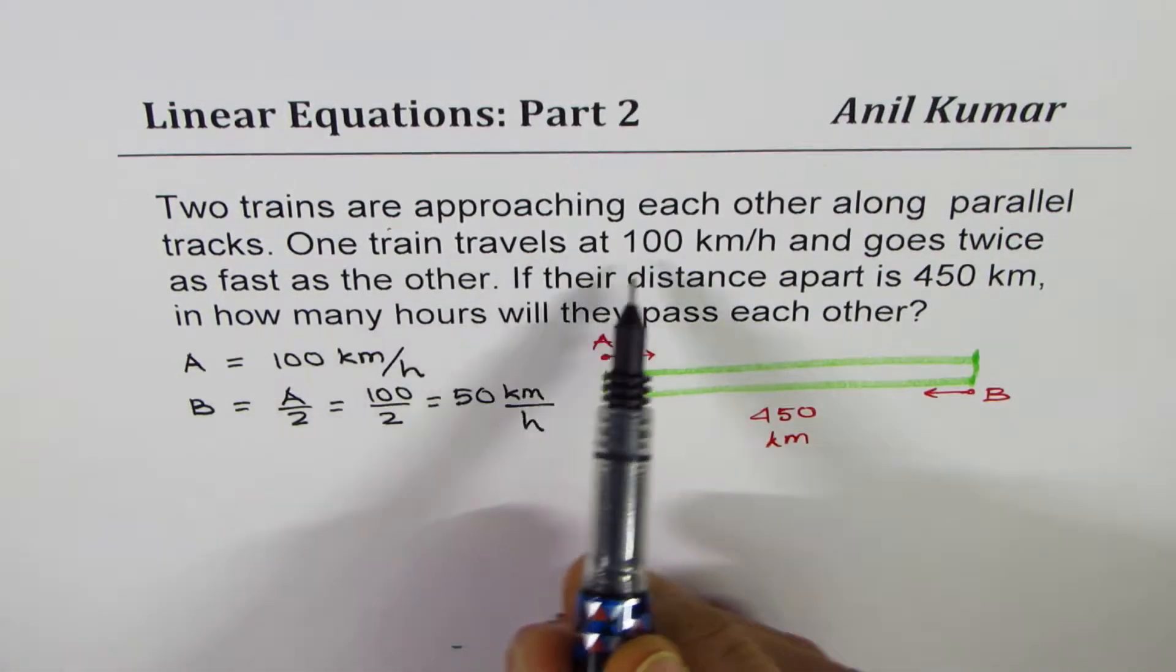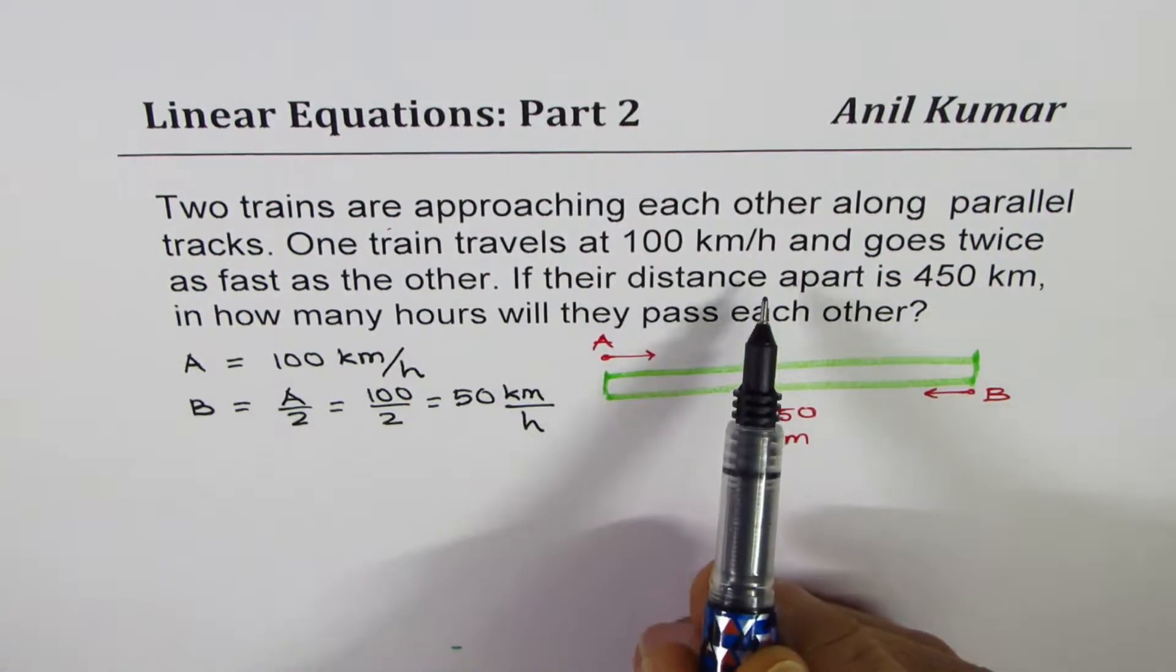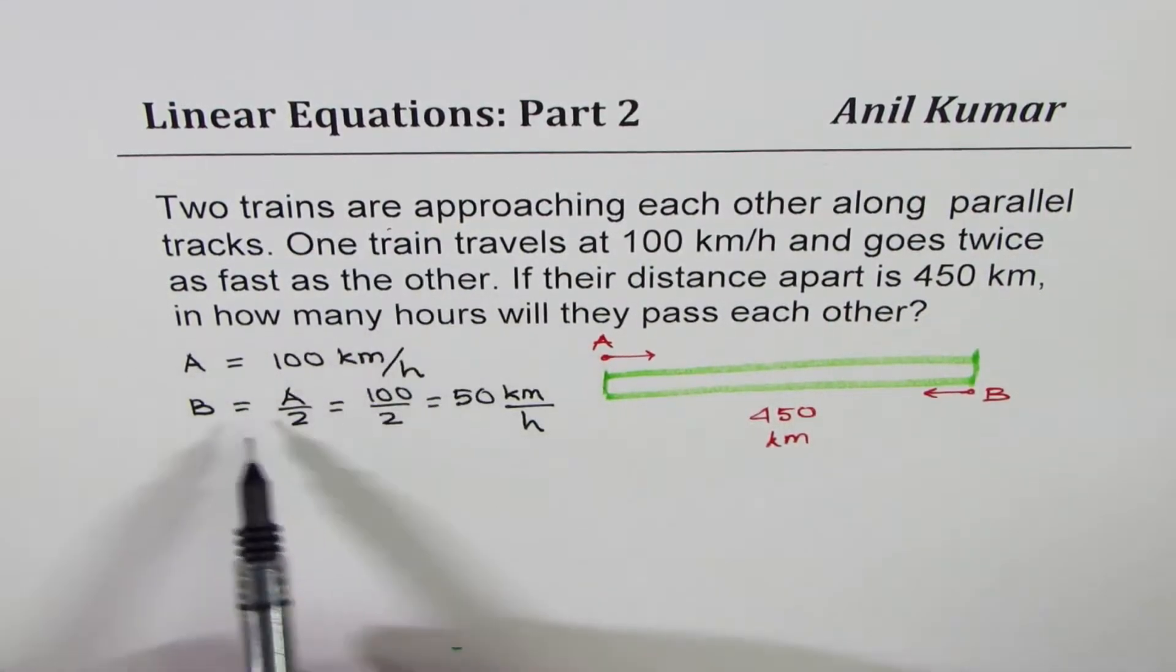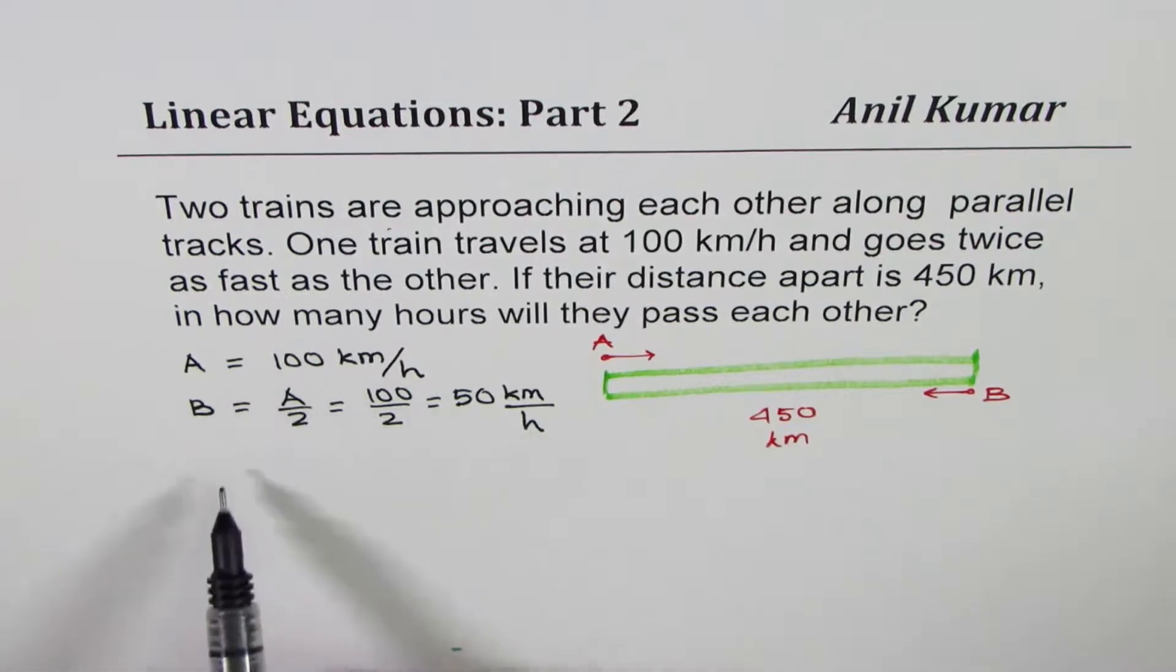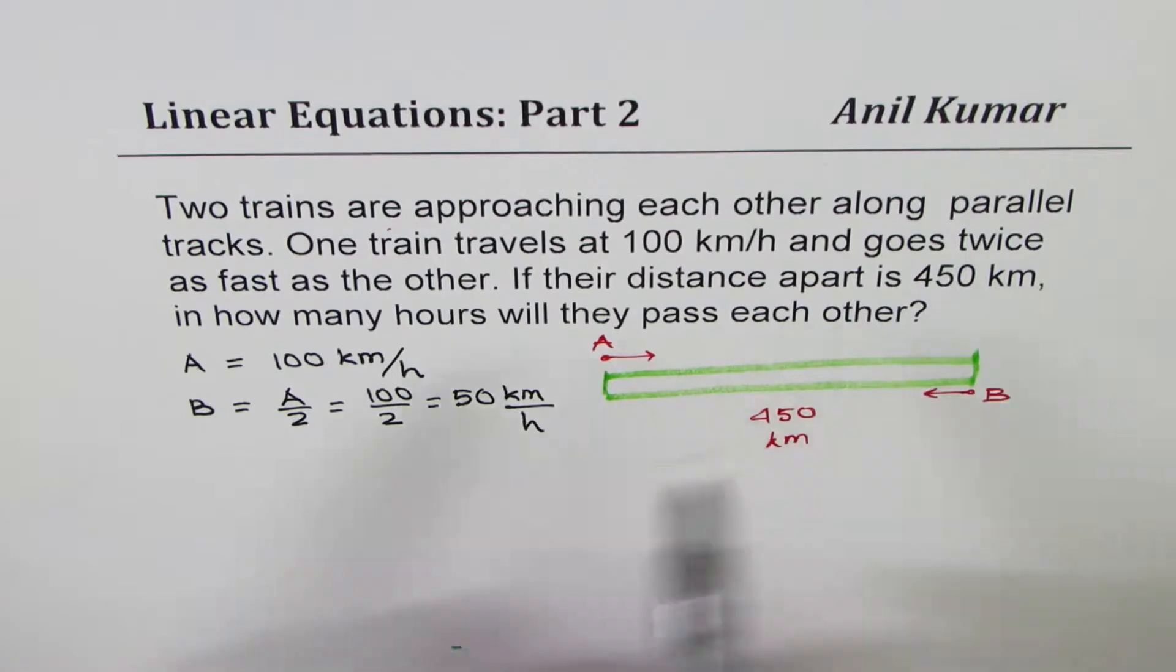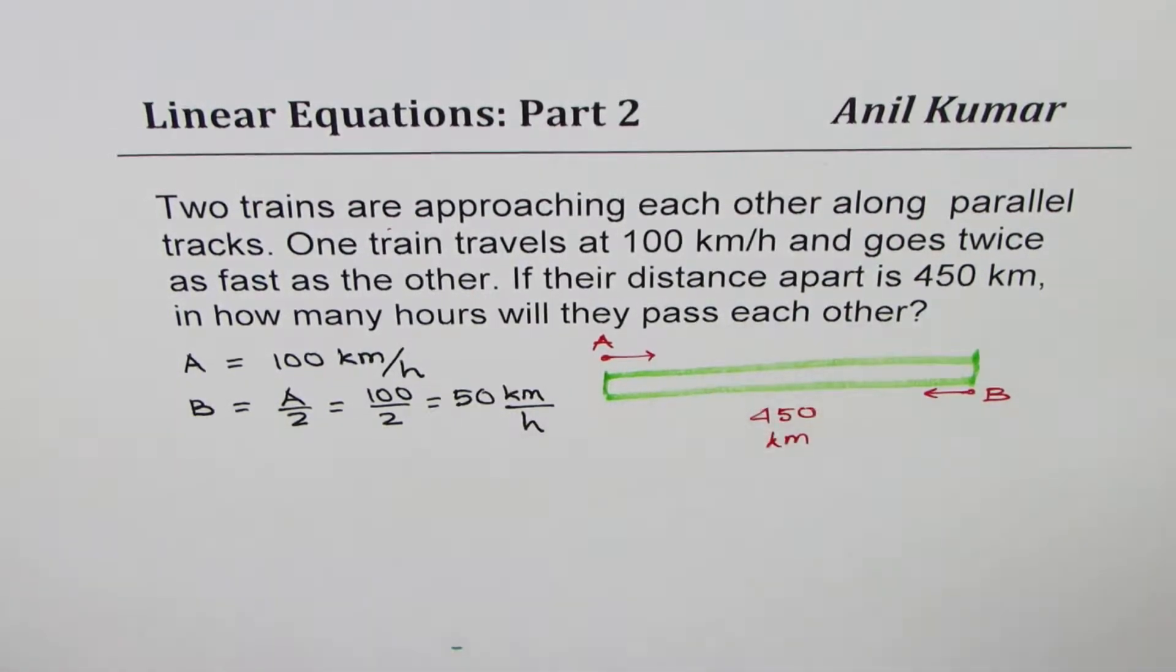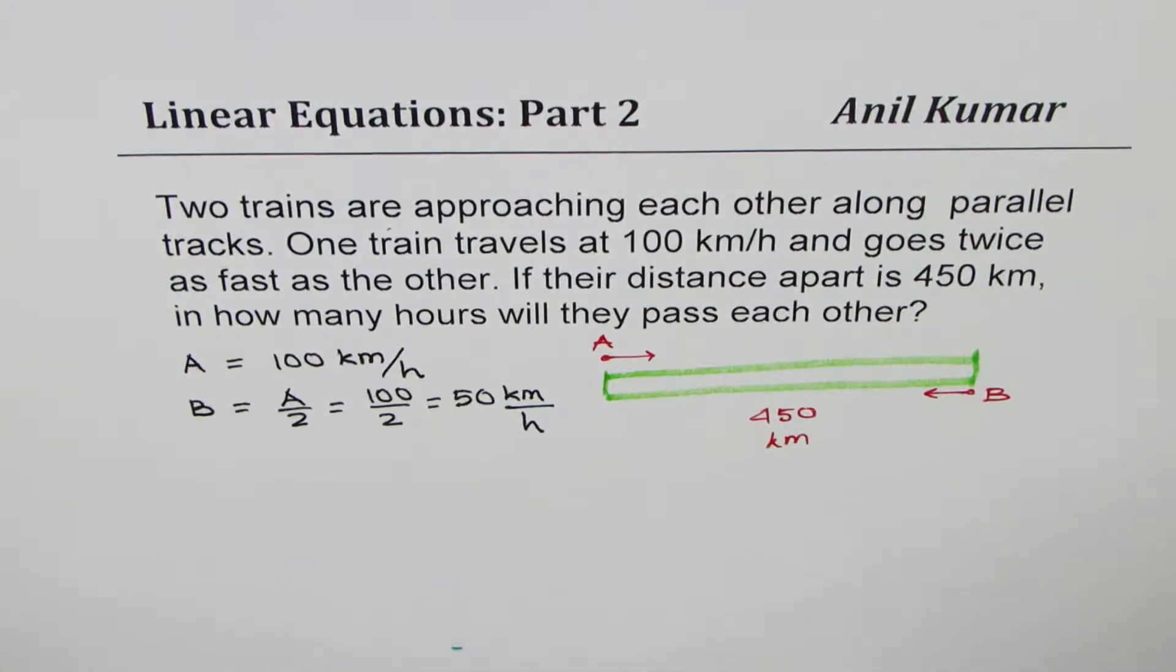One train travels at 100 km per hour. A is travelling at 100 km per hour and goes twice as fast as the other. So if the other is 50, it is twice. If their distance apart is 450 km, in how many hours will they pass each other? That is the question.